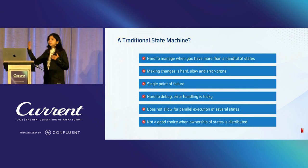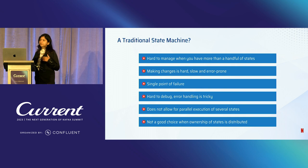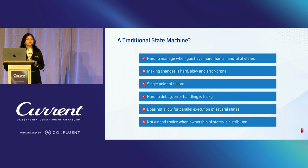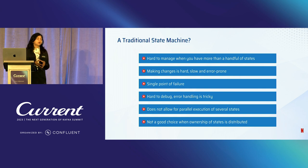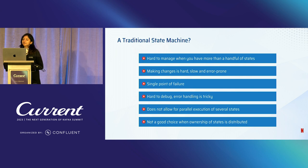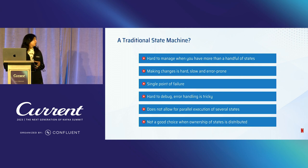For example, video encoding may take hours to process depending on the video content length and other factors. With separate teams owning different states, a single state machine can lead to challenges in ownership and collaboration. Overall, it becomes hard to handle the growing scale and maintain or troubleshoot production issues with large state machines.